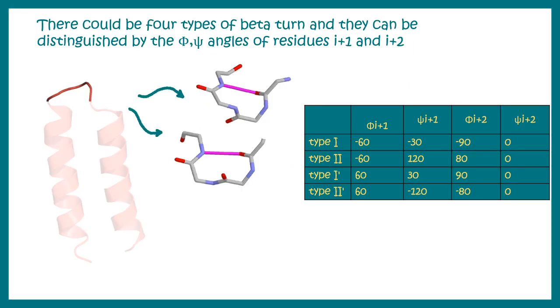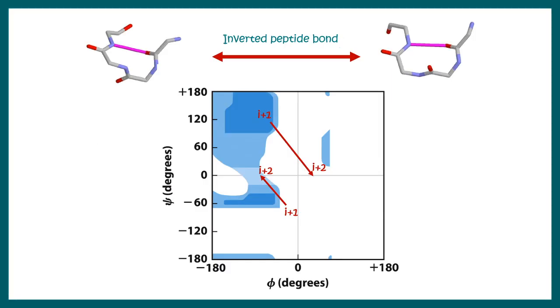Now there could be different types of beta turn and these nitty gritty details depends upon the phi and the psi angle of i plus one and i plus two residues. So here is a list of i plus one and i plus two residues phi and psi angle based on that there are four categories of beta turn: type one, type two, type one dash and two dash. Now in a Ramachandran plot you can see these beta turns in different locations.